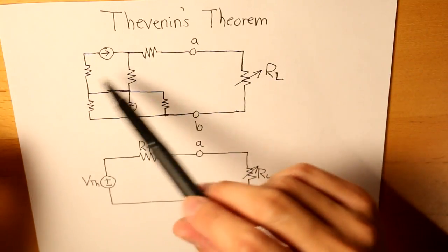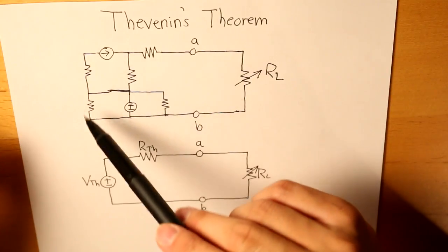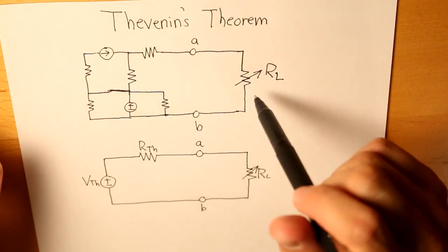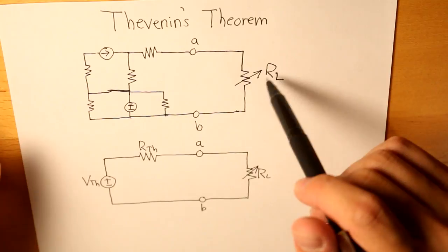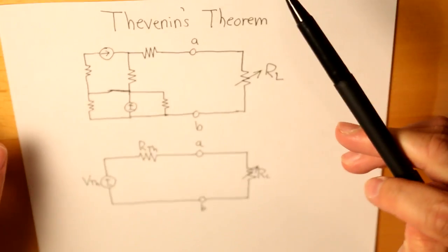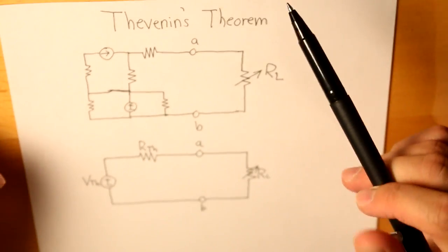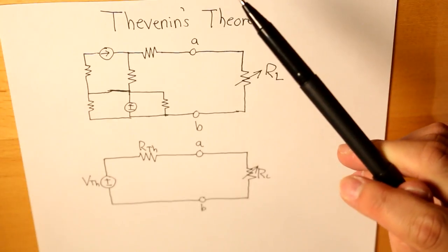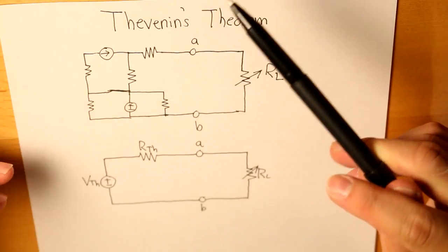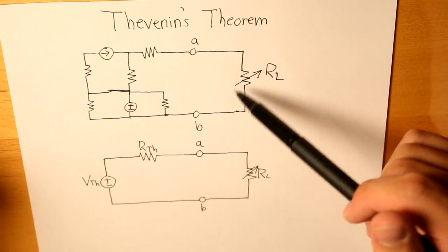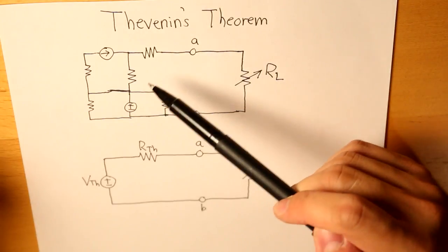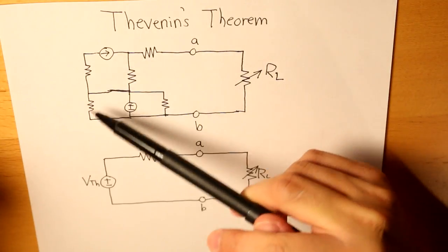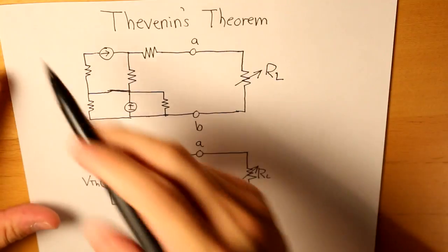So here we have our first circuit, our two terminal circuit with such complex circuitry, and here we have our load resistor or variable resistor where we can tune the resistor to change our voltage value across here.